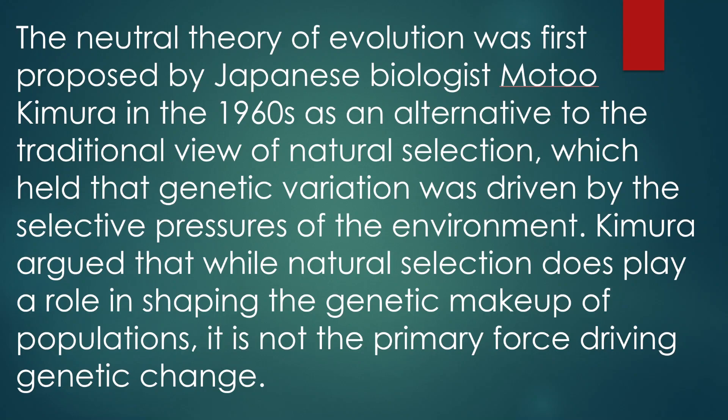The neutral theory of evolution was first proposed by Japanese biologist Motoo Kimura in the 1960s, as an alternative to the traditional view of natural selection, which held that genetic variation was driven by the selective pressures of the environment. Kimura argued that while natural selection does play a role in shaping the genetic makeup of a population, it is not the primary force driving genetic change.